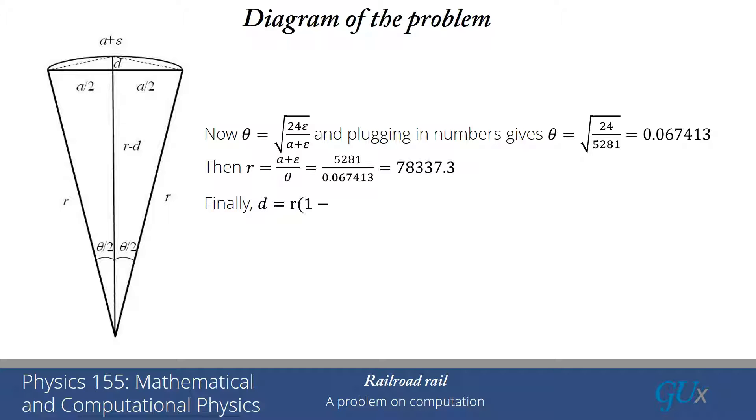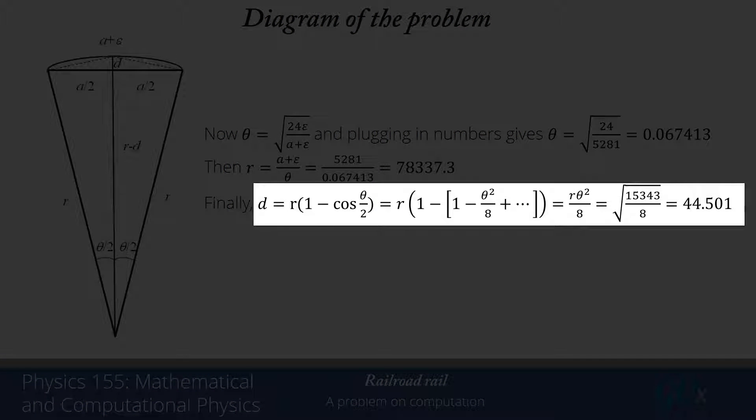Finally, we have a formula for D. Now, theta is small and cosine theta, when theta is small, is close to 1. So once again, we want to cancel that 1 by using a Taylor series expansion for cosine. That Taylor series expansion is 1 minus theta squared over 8 for cosine theta over 2. The 1s cancel. I'm left with R theta squared over 8. Plugging in the numbers, I get the square root of 15,343 divided by 8, which is 44.501 feet.